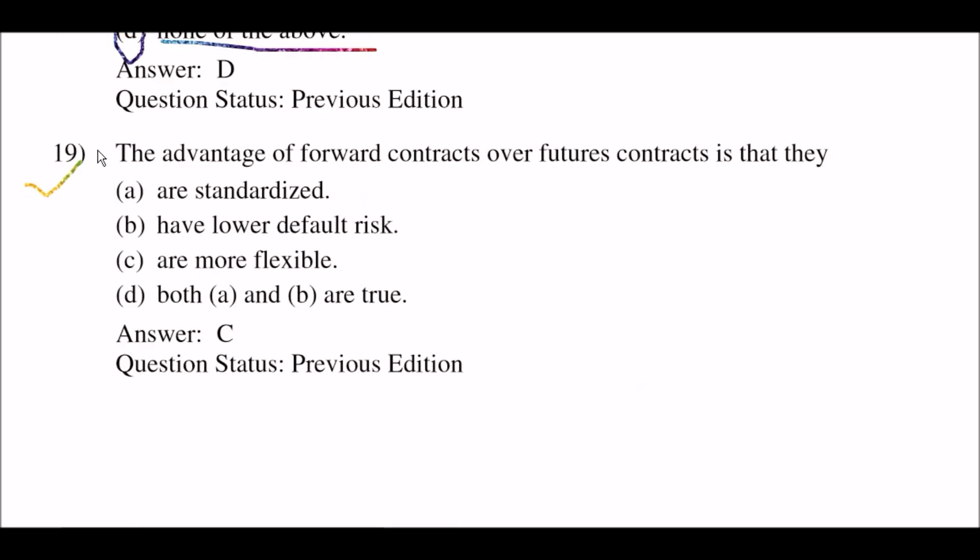Next question: the advantage of forward contracts over futures contracts is that they — option A: are standardized; option B: have lower default risk; option C: are more flexible; option D: both A and B are true. The right answer is option C: are more flexible.